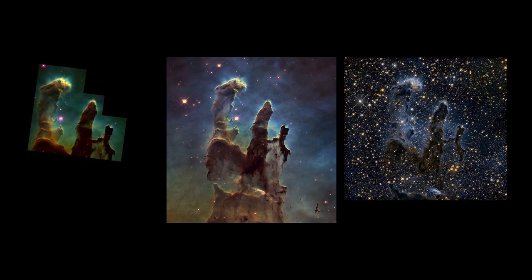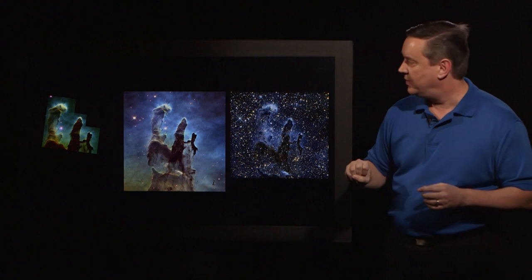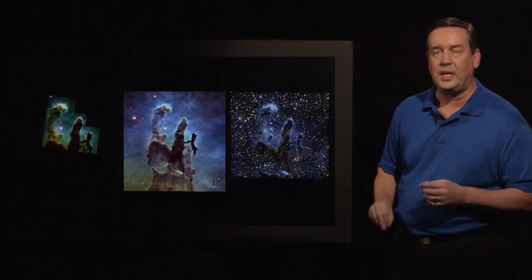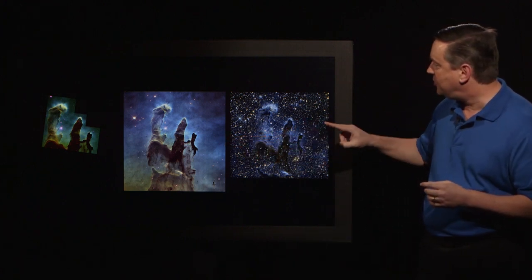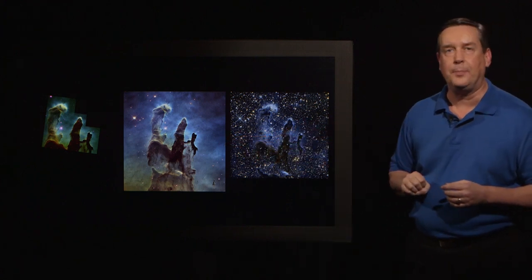Here are that trio of images of Hubble's views of the pillars in the Eagle Nebula: the original 1995 image, the 2014 visible light, and the 2014 infrared.